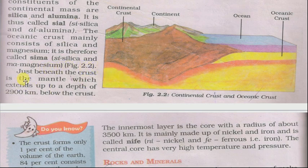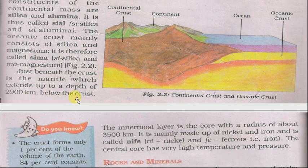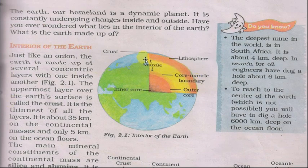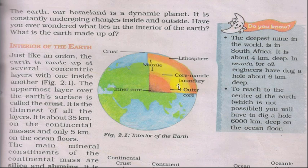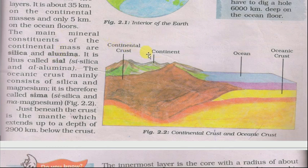Just beneath the crust is the mantle, which extends up to a depth of 2900 km. Crust ke bilkul neeche jo depth hai wahan mantle faili hui hai. As you can see in Figure no. 2 — the upper layer is the crust, below it is the mantle, and the innermost layer is the inner core. This is continental crust and this is oceanic crust.